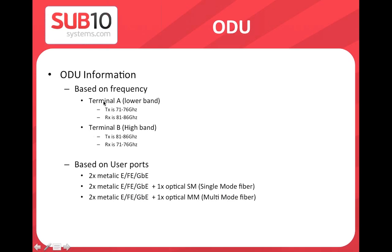Terminal A transmits on the lower frequency band (70 GHz) and terminal B on the higher band (80 GHz). Each ODU has at least two metallic ports, which are auto-sensing for Fast Ethernet or Gigabit Ethernet.